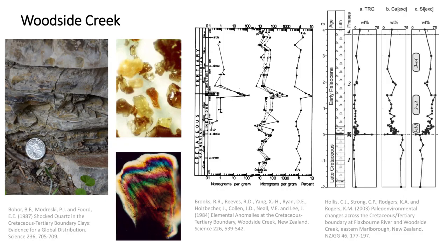At Woodside Creek, the KT boundary also shows shocked quartz, microtektites, and Robert Brooks's geochemical work showing the iridium anomaly and several other siderophilic element anomalies — very distinct. Our work found a big spike in clay, a big drop in carbonate content, and a big increase in silica content. The main point is how stable everything is through the Cretaceous — then things change abruptly, there's a bit of instability, and then things get back to normal.